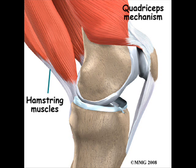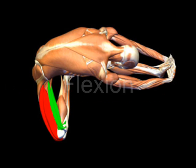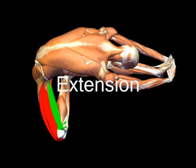Muscles fall into two basic groups, depending on what the person is doing at any given moment. For example, the quadriceps are the agonist for extending or straightening the knee. The hamstrings stretch when the knee extends and so are the antagonists for this action. This kind of movement is called flexion. The hamstrings become the agonist muscle when the knee bends and the quadriceps become the antagonist. This movement is called extension.